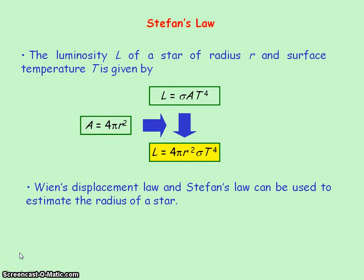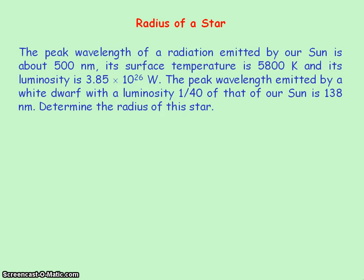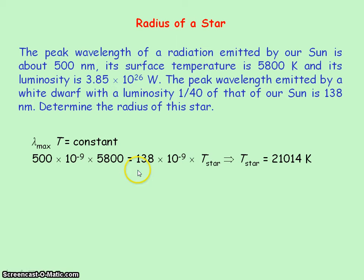And so Wien's law and Stefan's law can be used to estimate the radius of a star. So for this question we're going to determine the radius of a white dwarf. We first use Wien's law where the peak wavelength times the absolute temperature is equal to a constant. We have the peak wavelength and surface temperature of the sun, and we have the peak wavelength of the white dwarf. So hence we can use this to find the surface temperature of the white dwarf. So if we substitute in the values, we get the surface temperature of the white dwarf is equal to 21,000 Kelvin.